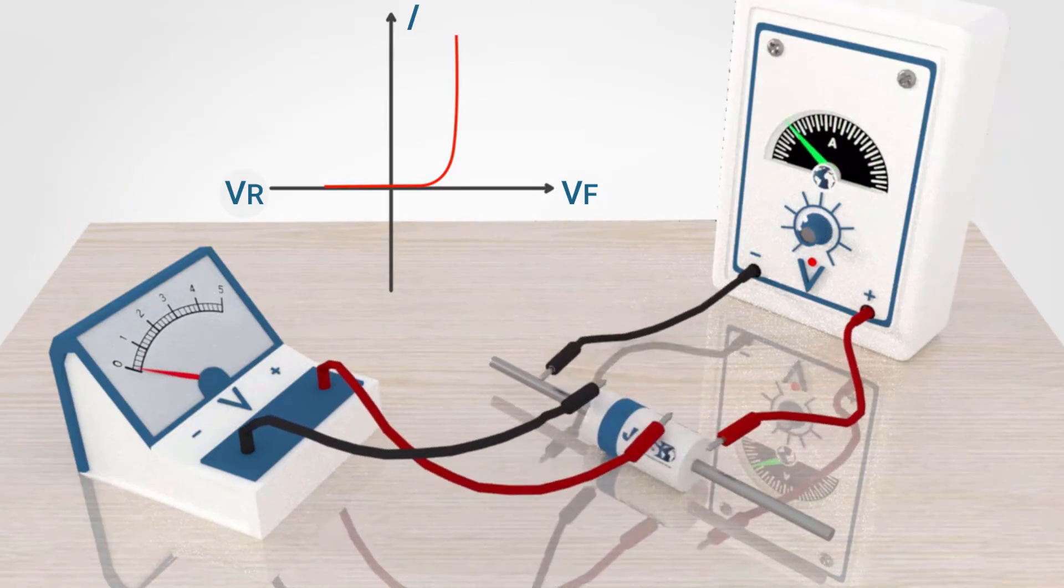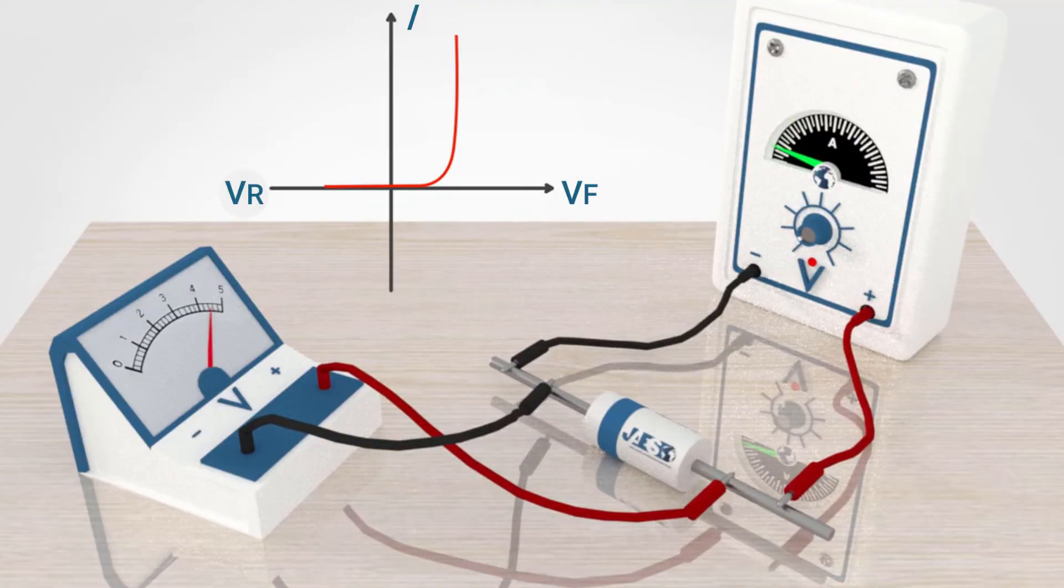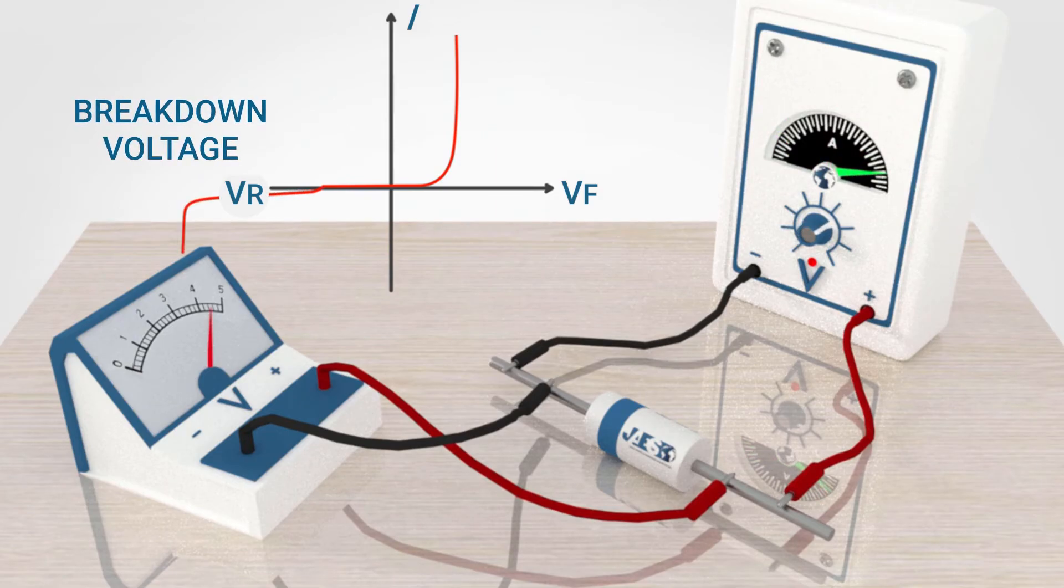In the reverse bias condition, if a very high voltage is applied, the diode could be damaged due to the rapid increase of the current for small increase of reverse voltage applied.